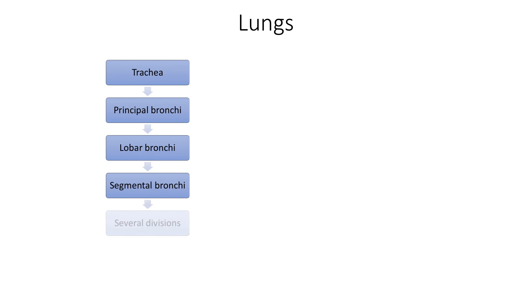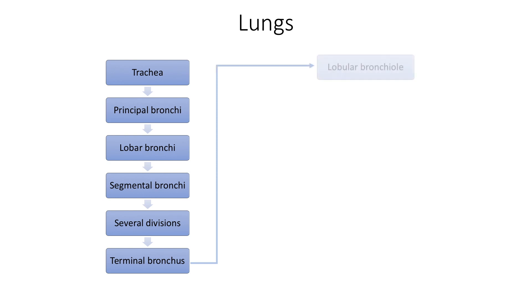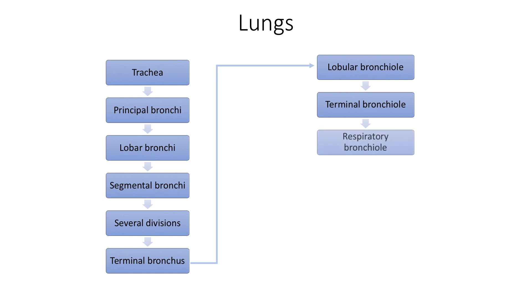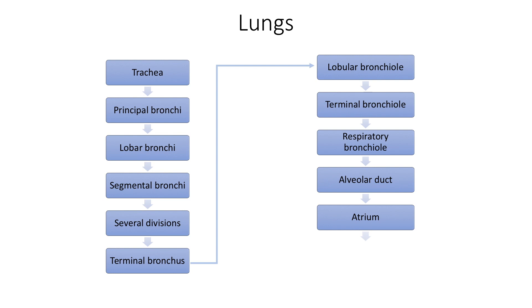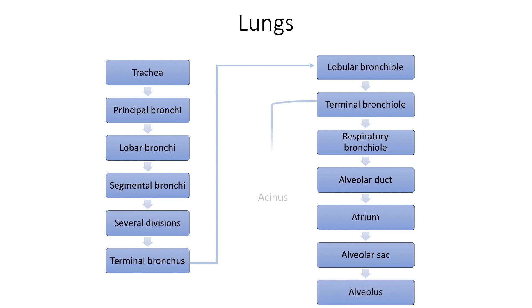These form one bronchopulmonary segment each. The segmental bronchi undergo several orders of division to form the smallest terminal bronchi. These terminal bronchi divide to form lobular bronchioles, which form one secondary pulmonary lobule, and divide to form up to six terminal bronchioles. The terminal bronchioles divide into multiple respiratory bronchioles, each leading successively into alveolar ducts, atrium, and alveolar sacs made up of alveoli. The part distal to the terminal bronchiole is an acinus — the functional area of lung for gas exchange — and the part distal to the respiratory bronchiole is a primary lobule.